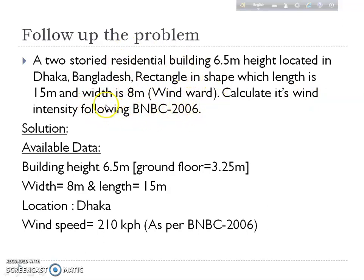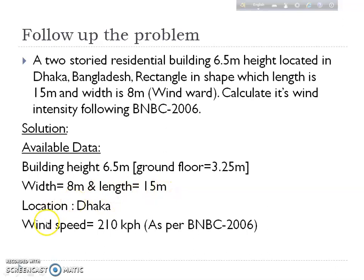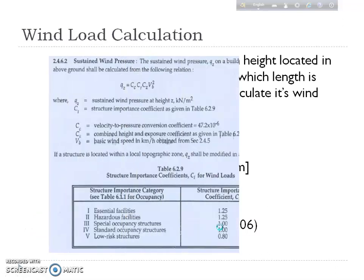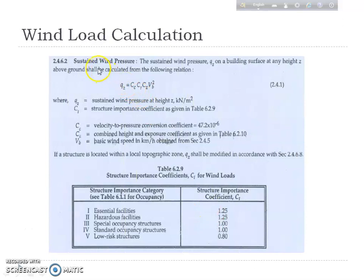We need to find wind intensity for the given data. The available data: building height is 6.5 meters, ground floor height is 3.25 meters (half of 6.5 meters), width is 8 meters, length is 15 meters, and the location is Dhaka. As per BNBC 2006, the wind speed is 210 kph.